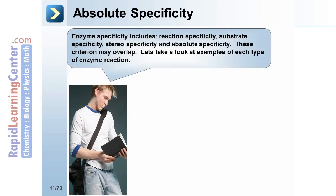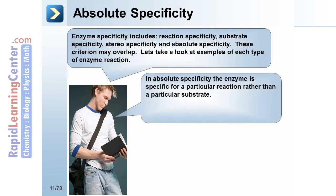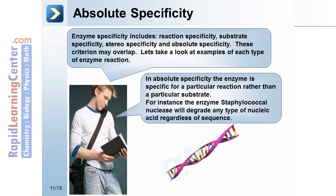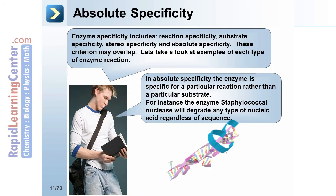Absolute specificity: Enzyme specificity includes reaction, substrate, stereo, and absolute specificity — these criteria may overlap. In absolute specificity, the enzyme is specific for a particular reaction rather than a particular substrate. For instance, the enzyme staphylococcal nuclease will degrade any type of nucleic acid regardless of the sequence of the nucleic acid. This is reaction specificity.